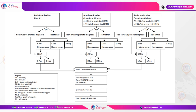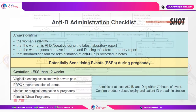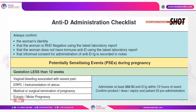Regarding anti-D administration for potentially sensitizing events during pregnancy: for gestational age less than 12 weeks, follow the NICE guideline — for surgical management of ectopic pregnancy, surgical termination, or any instrumentation of the uterus beyond 10 weeks, administer anti-D. Between 12 to 20 weeks, for any potentially sensitizing event, administer at least 250 units within 72 hours.